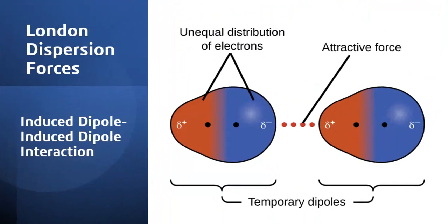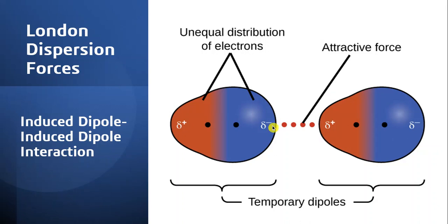London dispersion forces are the third type of Van der Waals forces, in which induced dipole-induced dipole interaction occurs. Unequal distribution of electrons makes a non-polar molecule polar — called a temporary or instantaneous dipole — which then interacts with another non-polar molecule, inducing polarity through uneven electron distribution. The force of attraction between these two instantaneous and induced dipoles constitutes London dispersion forces.